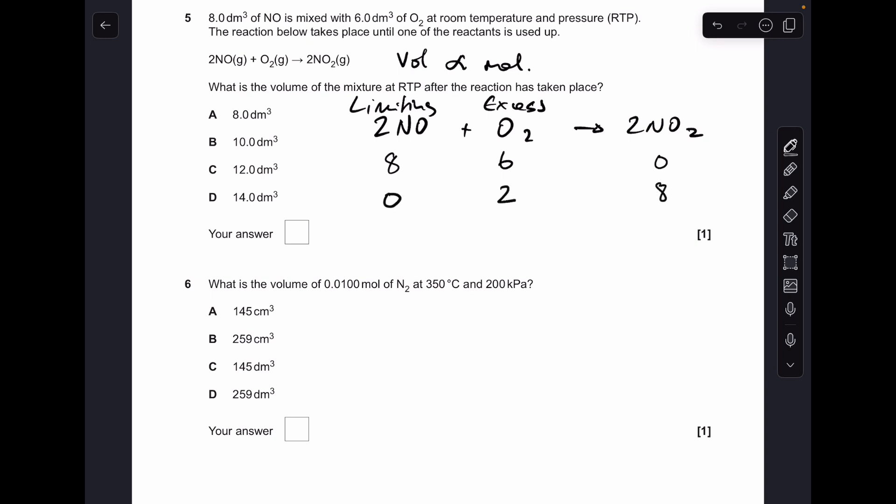So what does that mean? It means that all of the NO is going to react so you'll have nothing left at the end. Four decimetres cubed of the O2 will react so you'll have two left at the end. But if you look at the ratio between NO and NO2, it's one to one. So if eight decimetres cubed of NO react, eight decimetres cubed of NO2 is going to form. So you can see what have we got left at the end of the reaction: we've got two and eight, we've got ten decimetres cubed, so B was the answer.